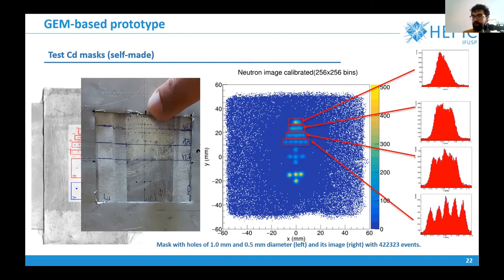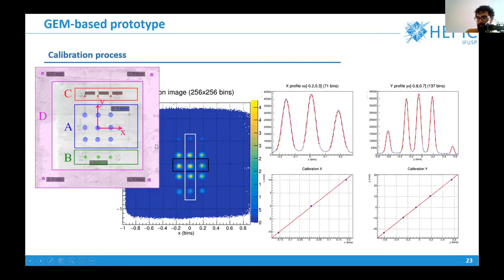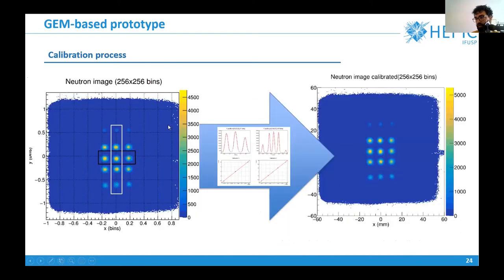Here we can have an idea about the resolution, spatial resolution of our detector. This mask we used for the calibration, for position calibration of our detector. We can plot here in the white the white region, we can plot the Y profile and the X profile of the black region here. We know the positions because of the calibration of the mask. Knowing the real positions of these holes and their position in being coordinates, we can get the calibration equations and we are able then to calibrate the position of this image.